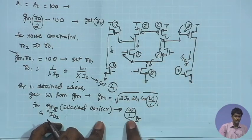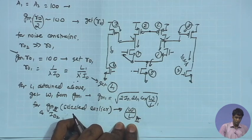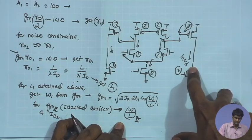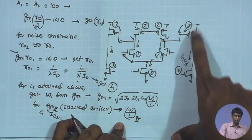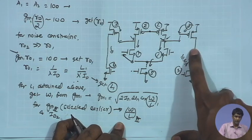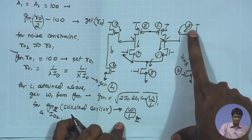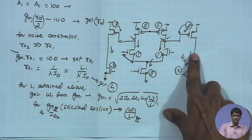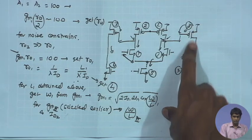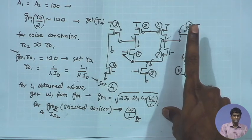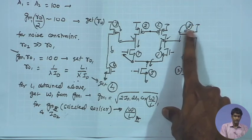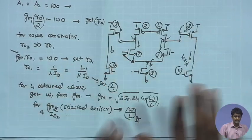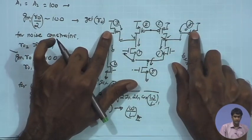For the second stage, W/L of M3 was already determined, gm2 is known, and bias current is known. For the second stage we assume ro of the two devices is similar since there is no significant noise constraint. With gm2 known and ro known, gm2·ro = 100 (the required second-stage gain), which gives the required ro and hence the required L. With both L and W/L known I can find W and L for M3.